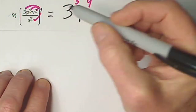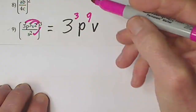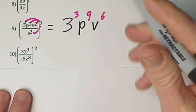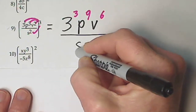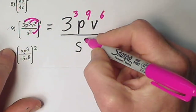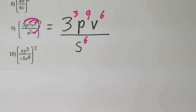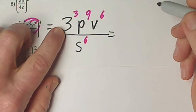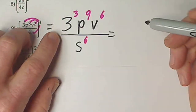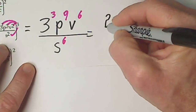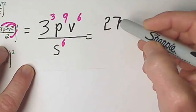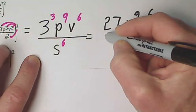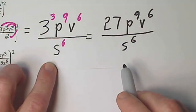We end up with 3 — 1 times 3 is 3. Then 3 times 3 is 9 for the next variable. Then V — 2 times 3 is 6. And in the denominator, S to the 3 times 2 is 6. I'm happy with the answer in this form. Some tests might go ahead and calculate 3 to the 3rd, which is 27. So the answer is sufficient as written, but you could also write 27 P to the 9th V to the 6th over S to the 6th. Either form is correct.